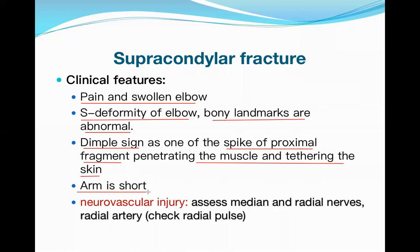The arm will be shorter due to the distal fragment moving slightly proximally and backwards. The most important problem is neurovascular injury — without it, this fracture is relatively easy to treat. We must assess median nerve and radial nerve function. The radial pulse must be assessed: if it is weaker than the other side, the brachial artery is compromised and urgent treatment is required.